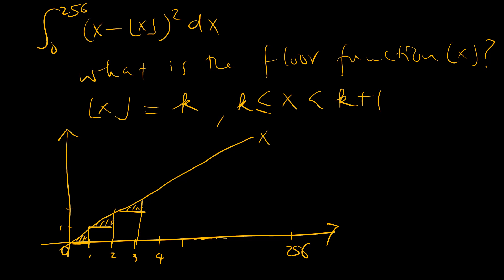So these are going to be what we're going to be focusing on, but we do have to square the value of the differences. And as you can see, these values are the same throughout. Let's look at the more analytical way of solving this problem, but I could pretty much just focus on 0 and 1 and then multiply by the 256 spaces that we have.